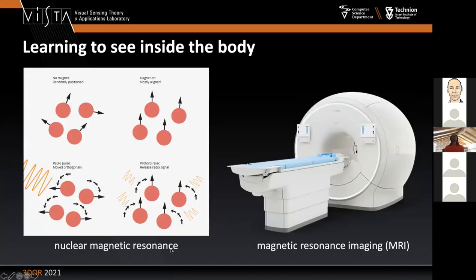Another kind of medical imaging I'd like to mention, where we also tried the same notion of learning the imaging system, is magnetic resonance imaging. Just for those who don't know how this amazing machine works: it takes advantage of nuclear magnetic resonance, which tells us that if you put protons — or any spins — inside a very strong magnetic field, they will align along the direction of the magnetic field. When you excite them with radio frequency at a very specific resonant frequency that depends on the strength of the magnetic field, they change their orientation.